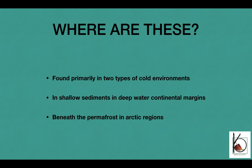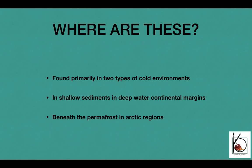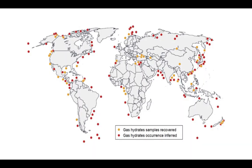Gas hydrates are found primarily in two types of cold environments: shallow sediments in deep water continental margins or beneath the permafrost in arctic regions. You can see in this diagram here — India, Bay of Bengal majorly. Apart from this, all these continental shelf areas throughout the world, plus the polar area, both to the south and towards the north.